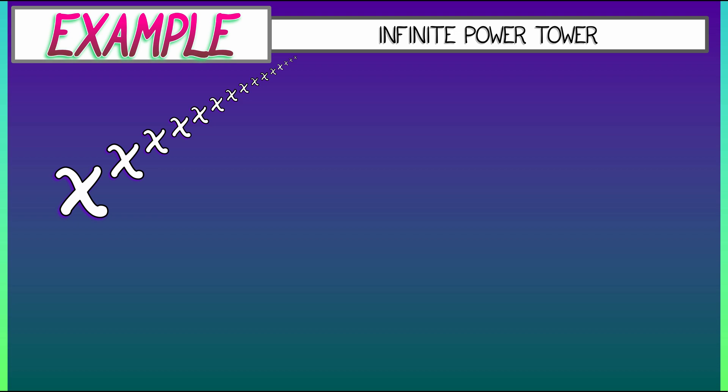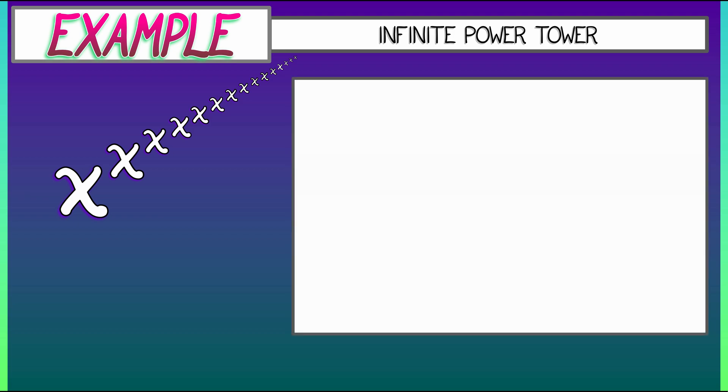We've got this function, the infinite power tower — x to the x to the x, and so on. Let's call that y. We can write this as y equals x to the y. That implicit equation captures within it this notion of iterated powers over and over, never ending.